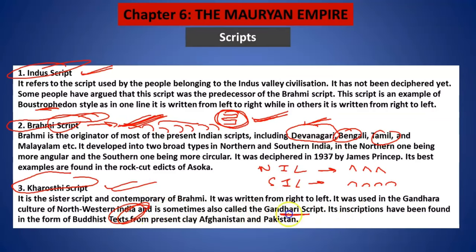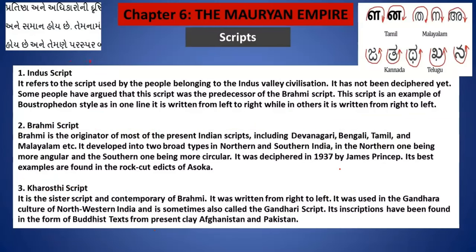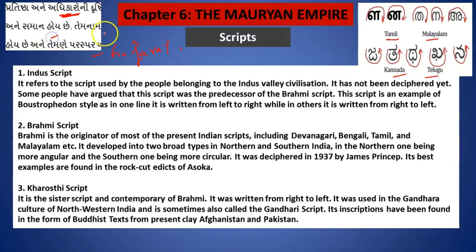Kharosthi script is used mainly in the north western frontier, in the Gandhara region. So the important one is Brahmi. If you are not able to understand angular vs circular — look at Tamil, Malayalam, Kannada, Telugu: all of them are circular in shape. Gujarati, for example, is angular in shape — it has angles. This is how you differentiate between the scripts.